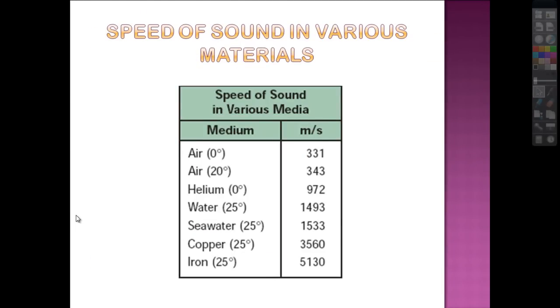Here's a chart. It has the speed of sound in various materials. Air at zero, air at 20. Helium, water, seawater, copper, and iron. And notice sound travels a lot faster in more dense materials. Iron's pretty dense. And it travels wicked fast than it does in air. And it travels a lot faster in water, too.